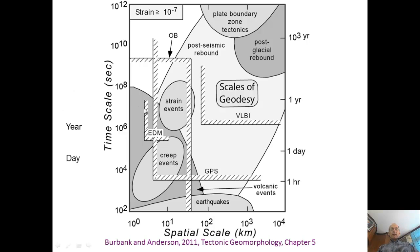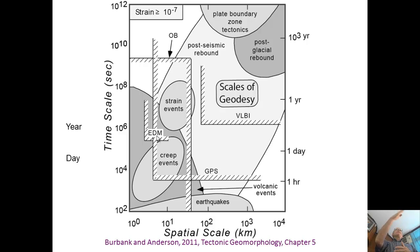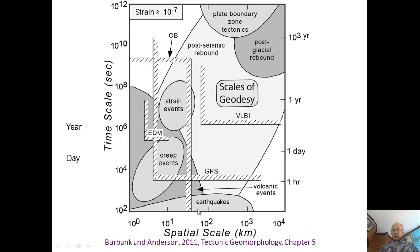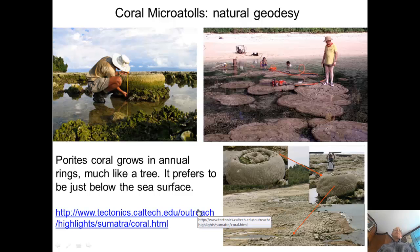EDM is laser range finding — you measure the distance from one place to another quite accurately, so you can look at changing distances. EDM also allows measuring changing angles. There's also direct observation — what humans can see in a lifetime over a few kilometers — but otherwise we need instruments.